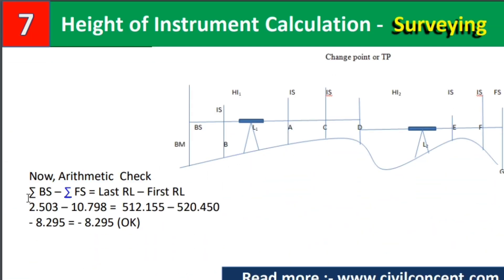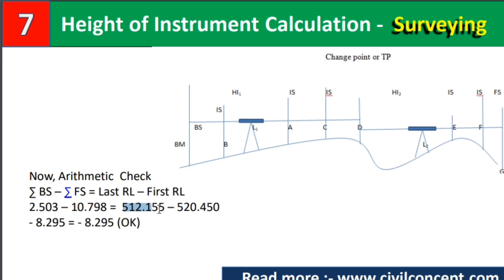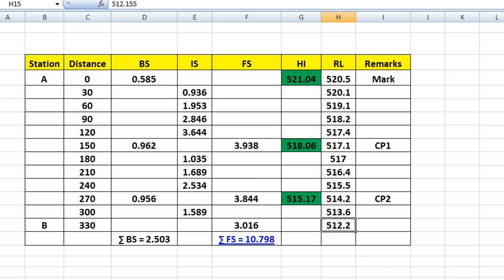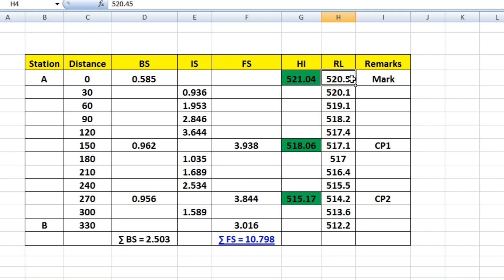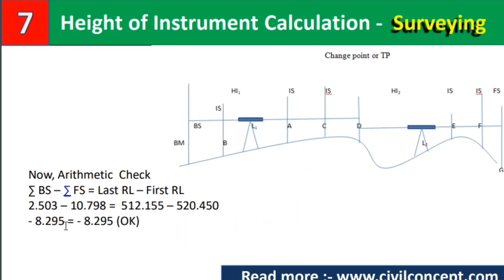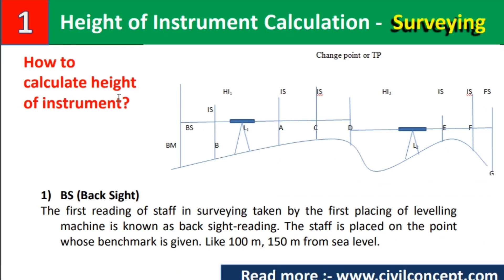For the arithmetic check, the formula is: ΣBS − ΣFS = Last RL − First RL. Here, ΣBS = 2.503, ΣFS = 10.798, Last RL = 512.155, and First RL = 520.45. Substituting: 2.503 − 10.798 = 512.155 − 520.45, which gives −8.295 = −8.295. The check is satisfied, confirming our calculations are correct. This is how we calculate the height of instrument and the reduced levels at different distances in surveying.